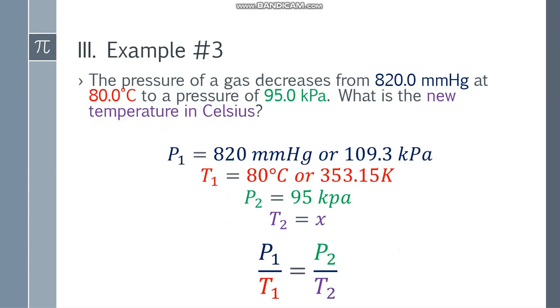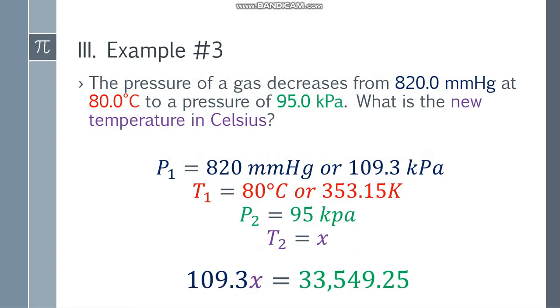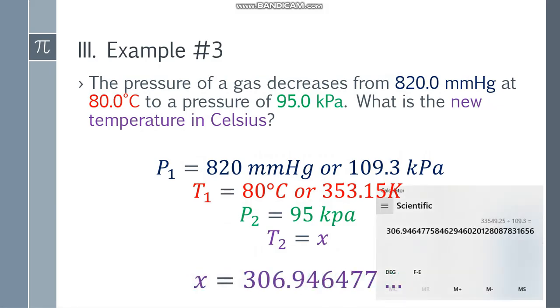Now we have 109.3 kPa, 95 kPa, and it's in Kelvin. We can solve it. Use the formula: P1 over T1 equals P2 over T2. Substitute the values: 109.3 over 353.15 equals 95 over x. Cross multiply: 109.3x equals 33,549.25.